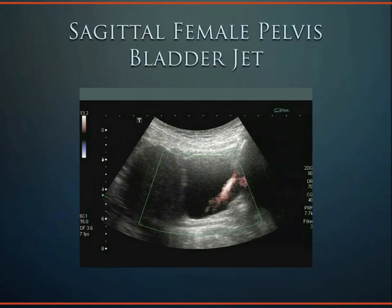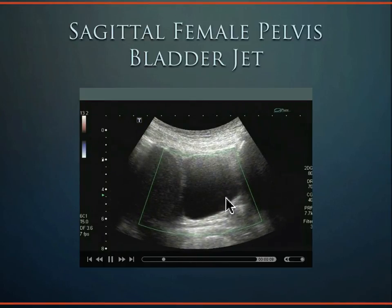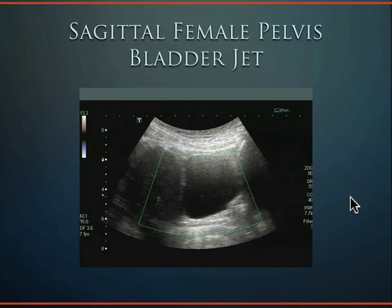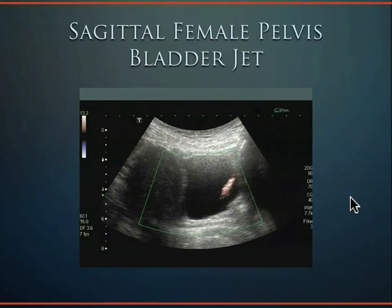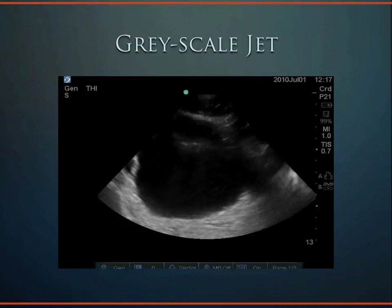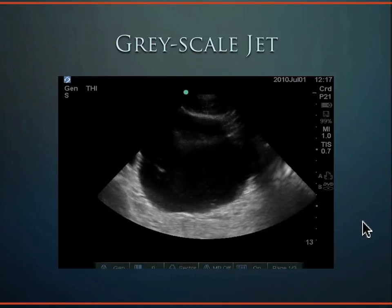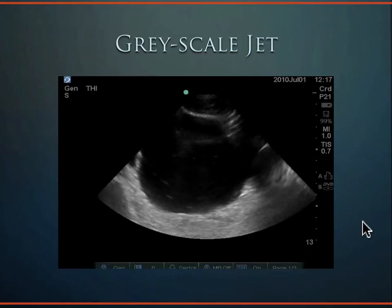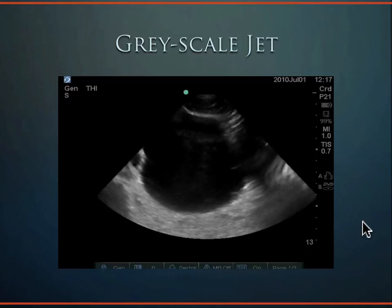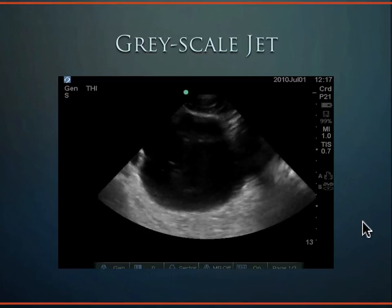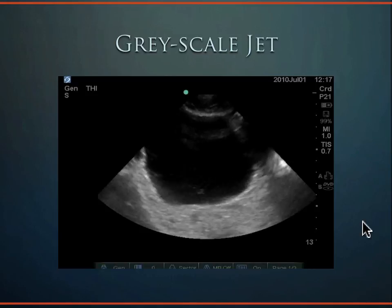In a sagittal female pelvis view, you can see the uterus and the back of the bladder, with bladder jets visible as urine flows in. You can even see bladder jets on grayscale alone if you slightly over-gain the image. To best visualize bladder jets, have the patient receive one to two liters of IV fluid, which gets the kidneys working and producing jets. IV caffeine at 60 mg further enhances jet production.